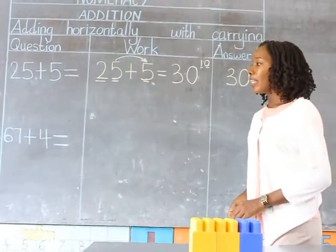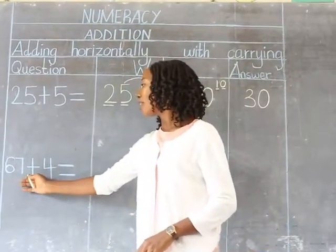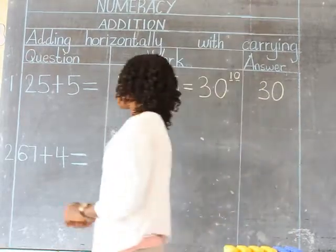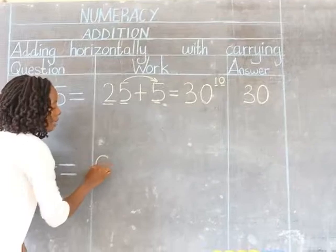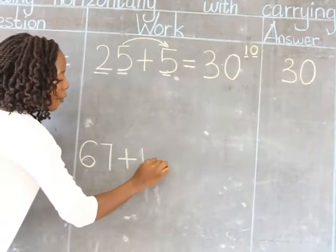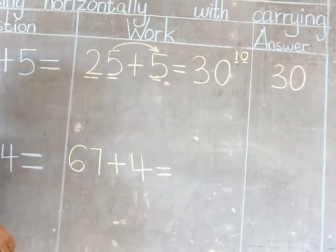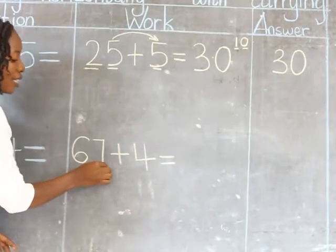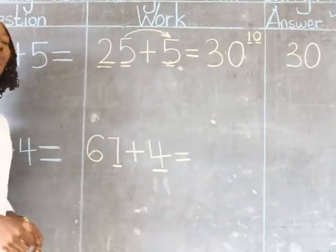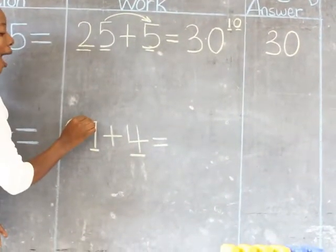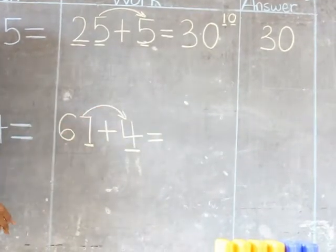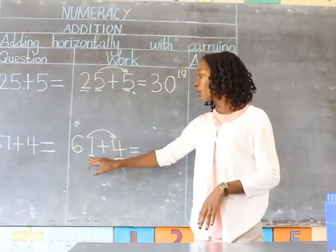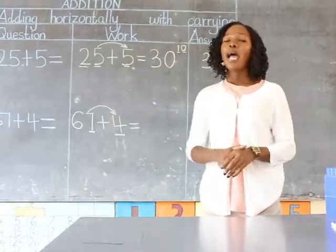The second example is 67 plus 4. I'm shifting the question to the workspace. We start by adding numbers in the ones place. Here we have 7 in the ones position and 4 in the ones position, so we are supposed to add 7 and 4. We count 7 building blocks first, then 4 building blocks, and put them together.